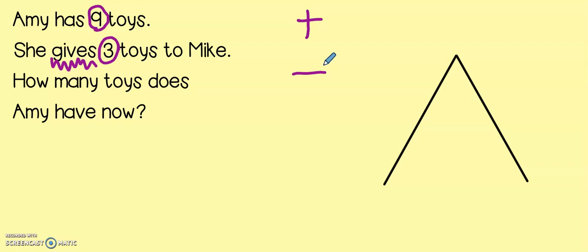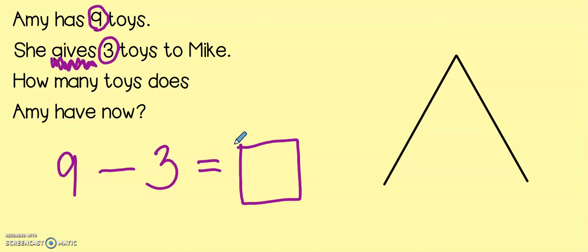I'm thinking that we should subtract because if she is giving her toys to someone else, she's going to have less of them. And if we have less, we know that we're going to subtract. So, she started with nine toys. She gives three to Mike. And we need to find out how many she has left.